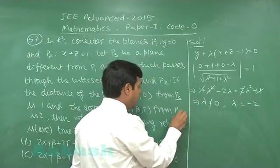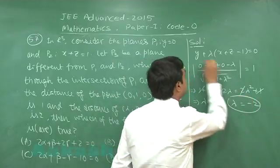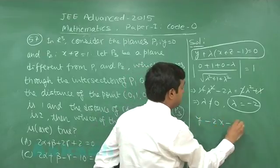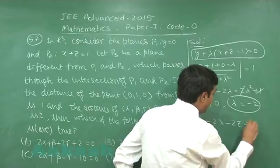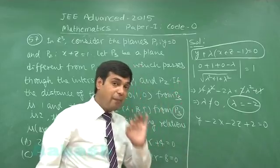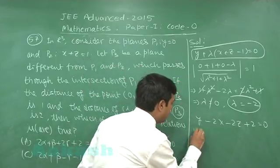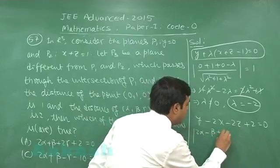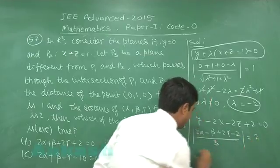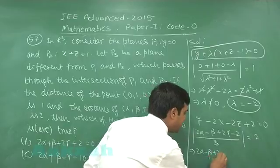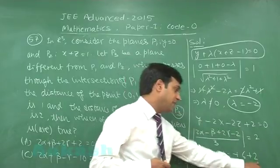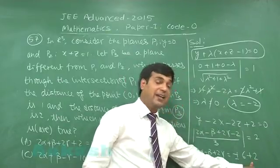Substituting λ = −2 in the equation, we get the required plane: y − 2x − 2z + 2 = 0. It is given the distance of this plane from (α,β,γ) is 2 units, that is |2α − β + 2γ − 2| divided by 3 equals 2 units, giving 2α − β + 2γ = ±6 + 2. Taking the plus sign we get +8; taking the minus sign we get −4.